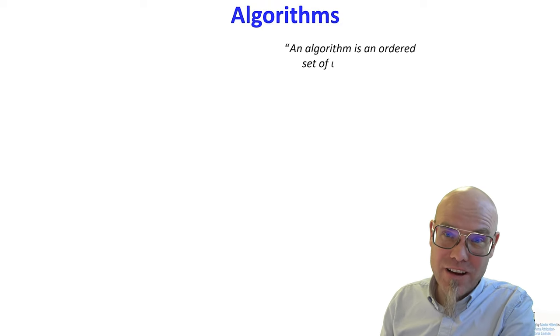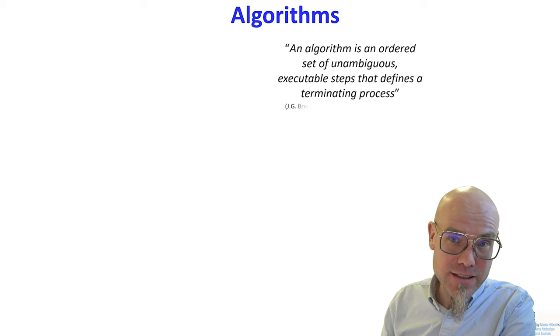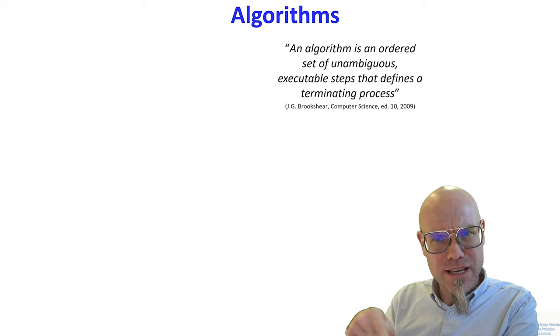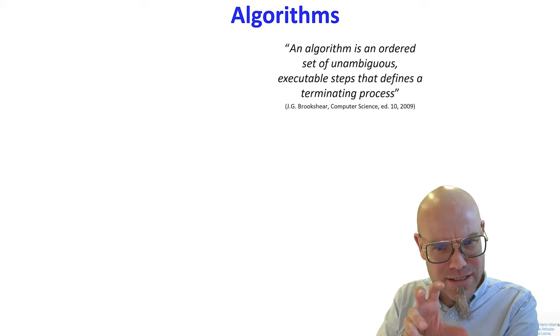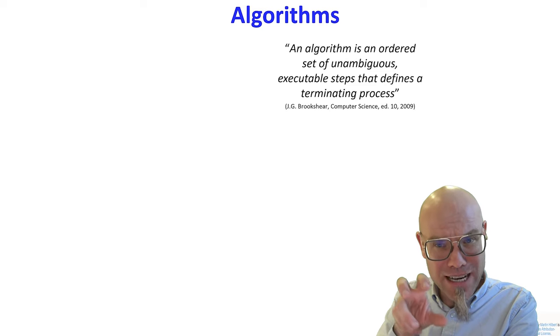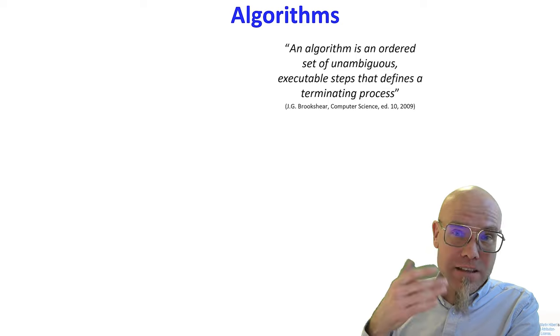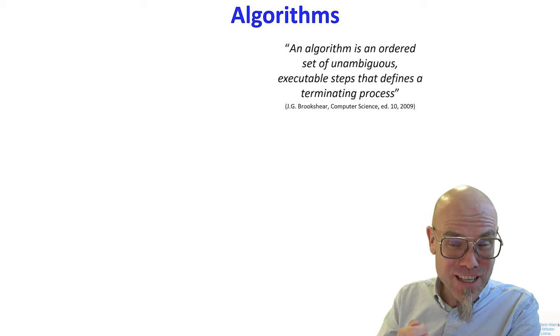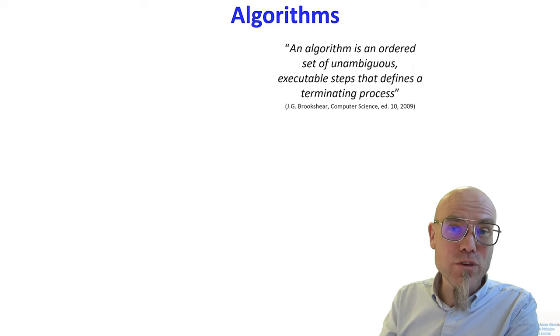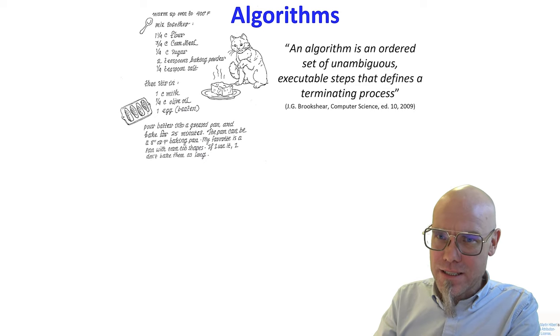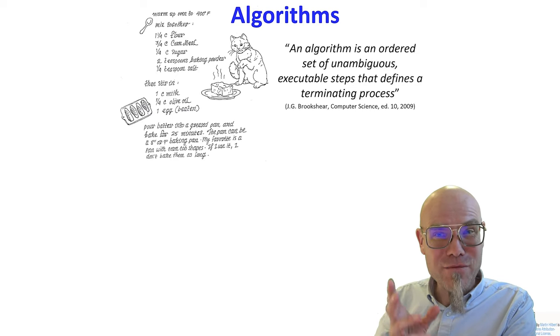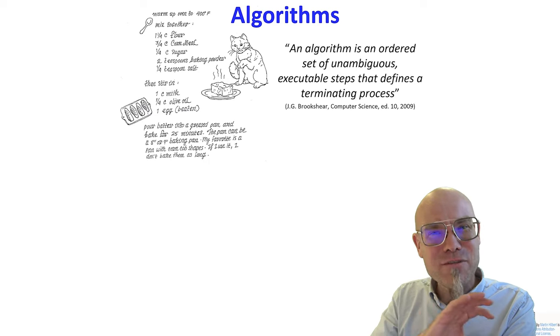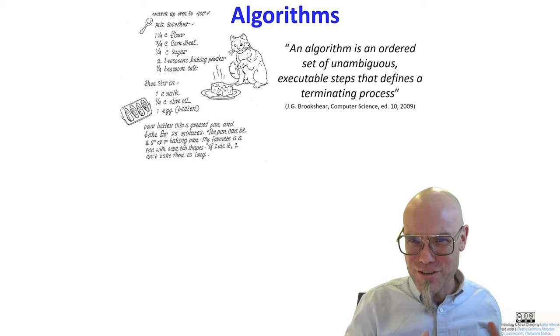What are algorithms? Open the computer science textbook. An algorithm is an ordered set of unambiguous, executable steps that defines a terminating process. The most important part is that an algorithm is an ordered set of unambiguous and executable steps. Now there's another word you can use. For all practical purposes, every time you hear the word algorithm, you can replace it with the word recipe. If you don't take anything else away from this entire specialization, replace algorithm with recipe. It tells you a lot about what's going on.